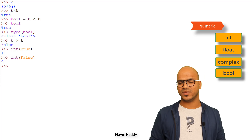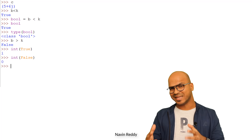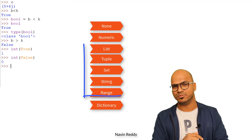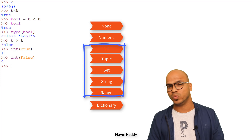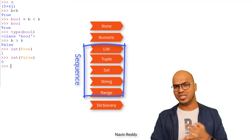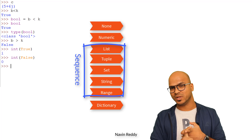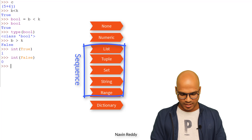So we've talked about None and numeric. The next types — list, range, set, tuple — those come under sequence.